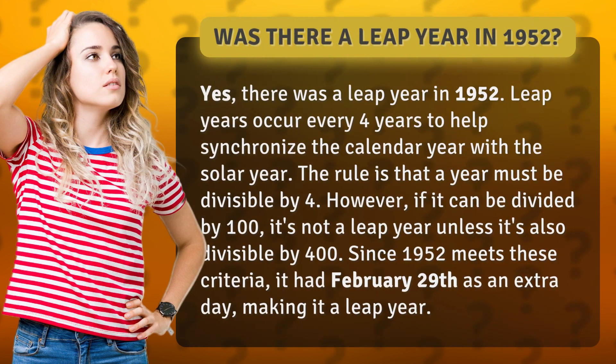Leap years occur every four years to help synchronize the calendar year with the solar year. The rule is that a year must be divisible by four. However, if it can be divided by 100, it's not a leap year unless it's also divisible by 400.